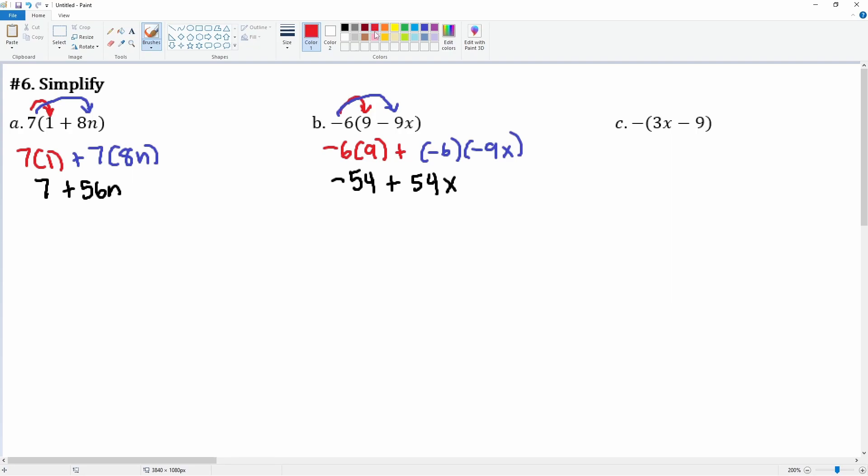Next, people don't understand, but there's a negative 1 in front. When you distribute, it's negative 1 times 3x, and negative 1 times negative 9. Negative 1 times 3x is negative 3x. Negative 1 times negative 9 is positive 9. That is after you simplify.